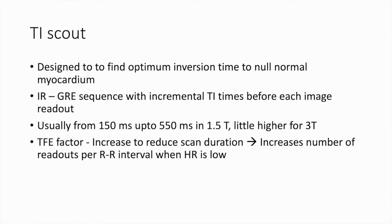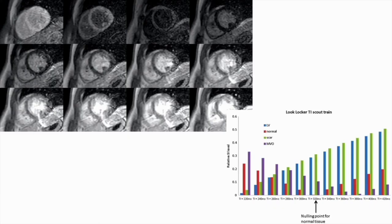The TI scout or look-locker sequence is designed to find the optimum inversion time to null the normal myocardium. It uses an inversion recovery gradient echo sequence with incremental TI times before each image readout, with the usual range between 150 to 550 ms at 1.5 Tesla. The TFE factor increases the number of readouts per RR interval and can be increased to reduce scan duration when heart rate is low. The TI scout image shows reducing signal intensity of the LV cavity and myocardium with increasing TI, and once the nulling point is reached, further increase in TI causes the signal intensity of the myocardium to rise again.